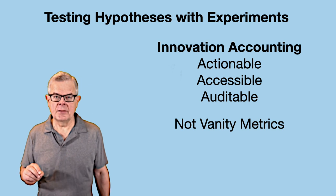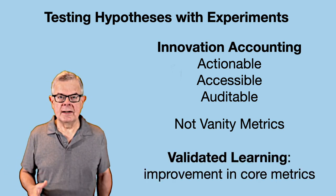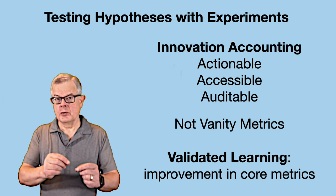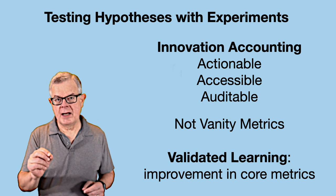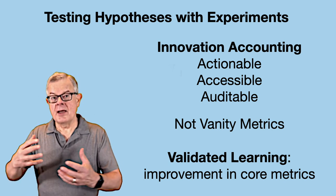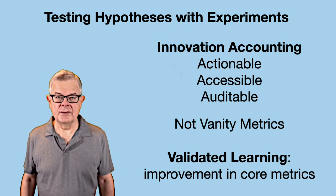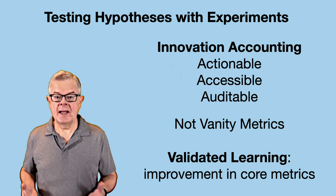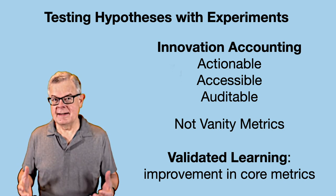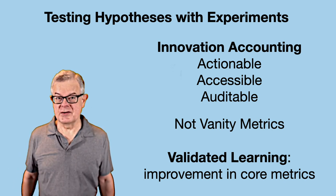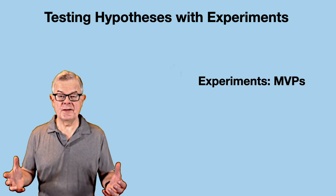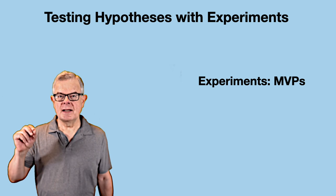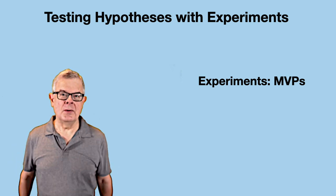That gets into his concept of validated learning — learning that helps you improve a core metric, like a registration rate or conversion into a paid customer rate. You're measuring specific rates of change so you can learn, do another experiment, and eventually optimize your business model. Testing hypotheses with experiments, measuring things that are actionable, accessible, and auditable — not vanity metrics — is the key to validated learning that actually improves your business model.